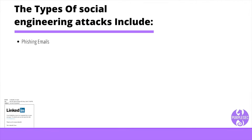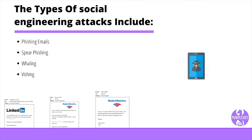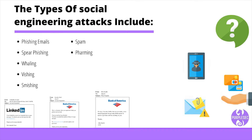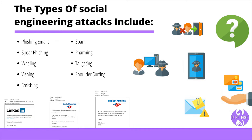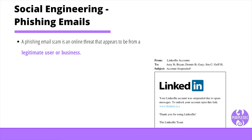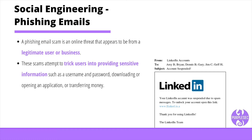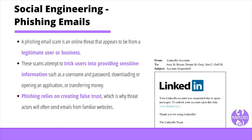The most common types of social engineering attacks include phishing emails, spear phishing, whaling, vishing, smishing, spam, pharming, tailgating, shoulder surfing, and dumpster diving. A phishing email scam is an online threat that appears to be from a legitimate user or business. These scams attempt to trick users into providing sensitive information such as a username and password, downloading or opening an application, or transferring money. Phishing relies on creating false trust, which is why threat actors will often send emails from familiar websites. When the user enters their credentials, the threat actor logs the information including the username and password.